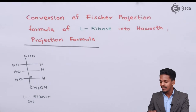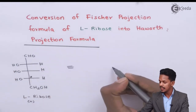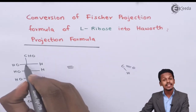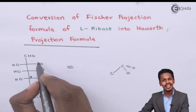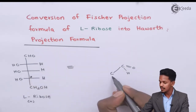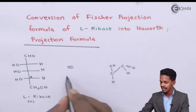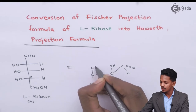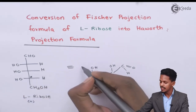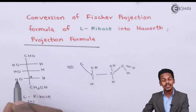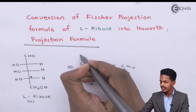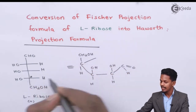We can write the Fischer formula in another form. The first carbon atom is written as C double bond O (aldehyde). The second carbon atom has OH on the right-hand side, so H is on one side and OH on the other. The third carbon has hydrogen on the lower side and OH on the upper side. The fourth carbon has OH and CH₂OH attached, so we write hydrogen, CH₂OH, and OH accordingly.